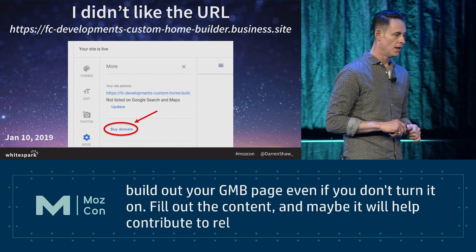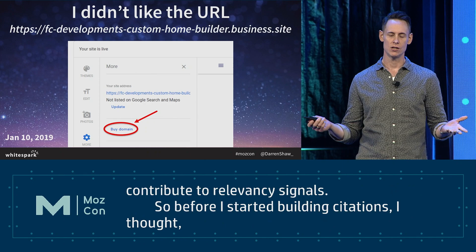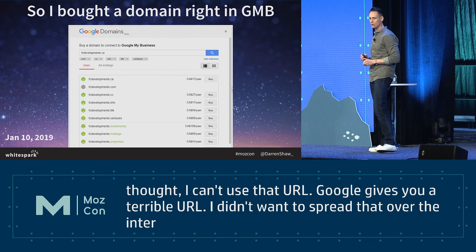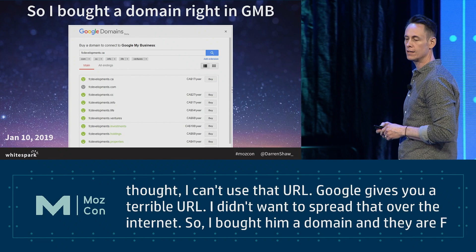Before I started building citations, I realized I couldn't use that GMB URL - Google gives you a really terrible URL and I didn't want to spread that all over the internet. Right within GMB you can buy a domain, so I bought them fcdevelopments.ca and it instantly connected with the GMB listing.